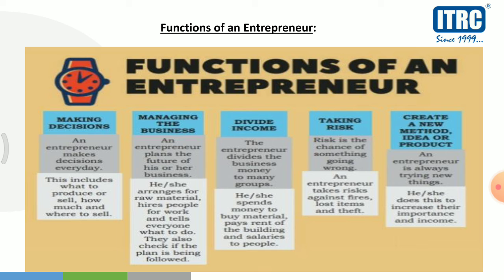Next is divide income — the entrepreneur divides the business money into many groups. जो entrepreneur को business से profit होता है, उसको वो divide करता है. उसकी बहुत सारी liabilities होती हैं — जहाँ business खोला है उसका rent देना होता है, employees की salaries देनी होती हैं, material खरीदना होता है. तो जो भी profit आता है उसे वो इन सब में divide करता है.